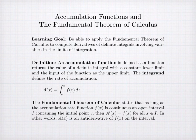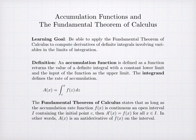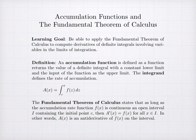In order to understand how we're doing this, we first need to define an accumulation function. An accumulation function is a function that returns the value of a definite integral where the lower limit is a constant and the upper limit is the variable corresponding to the input variable of the function. Inside the integral there's a function — that function is the rate of accumulation. The fundamental theorem of calculus tells us that as long as the function in the integrand, the accumulation rate, is continuous on an interval containing the lower limit c, then this function has a derivative equal to the integrand function evaluated at the input value x. In other words, every accumulation function is an antiderivative.